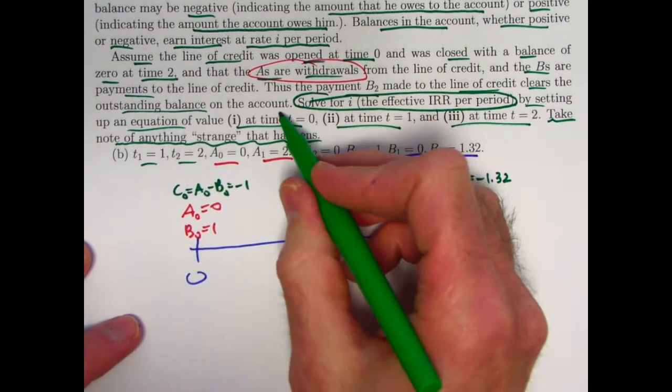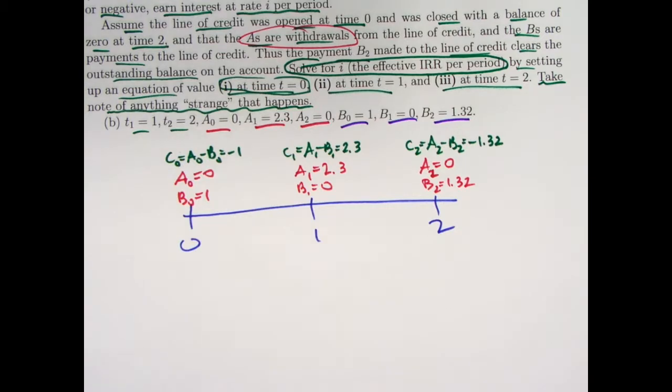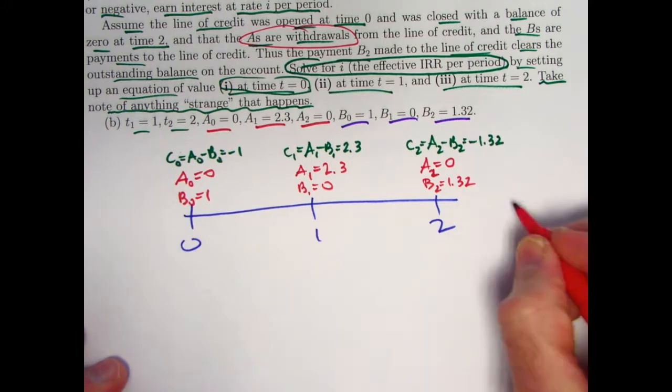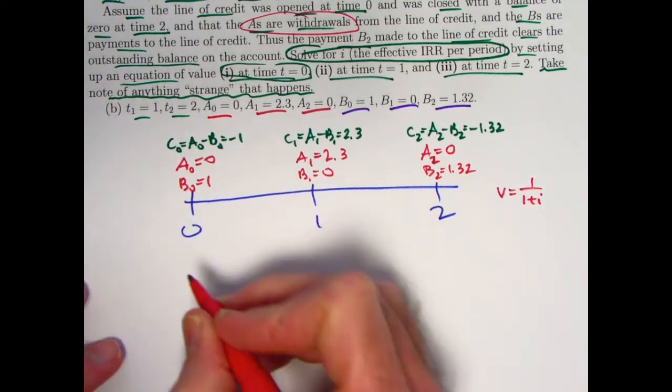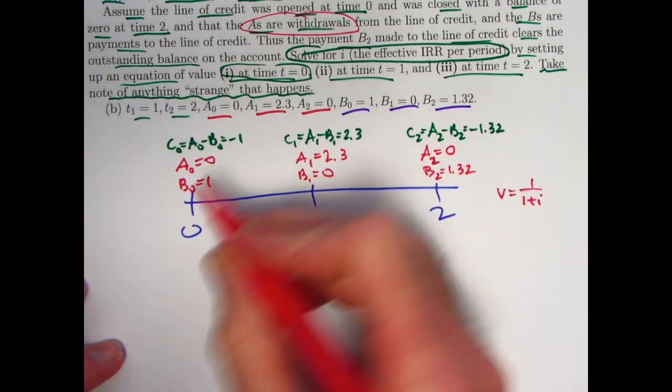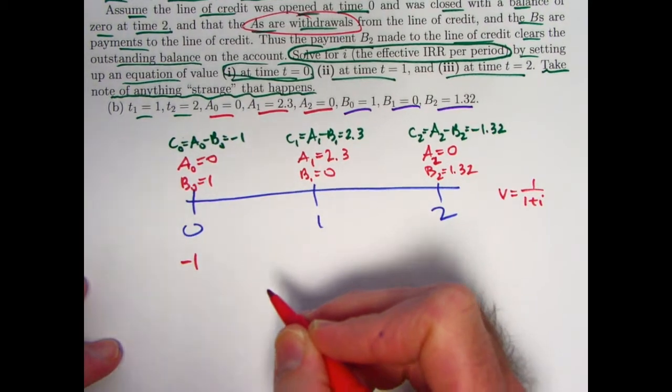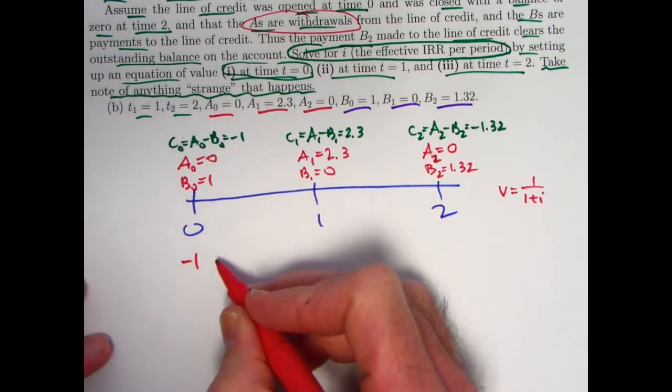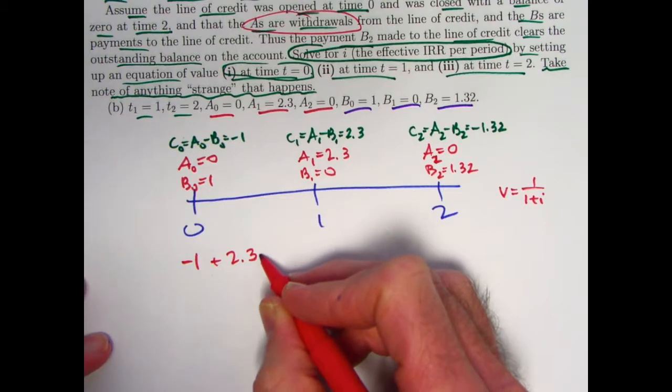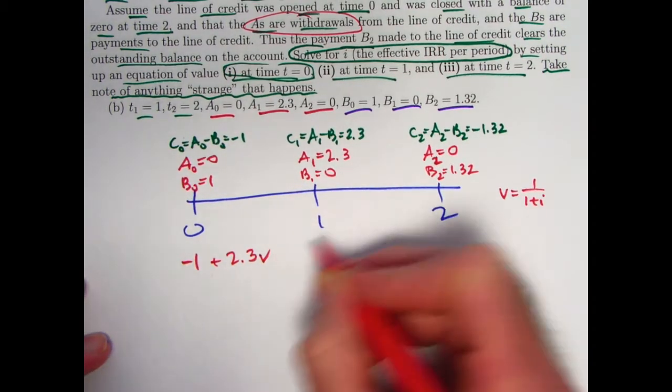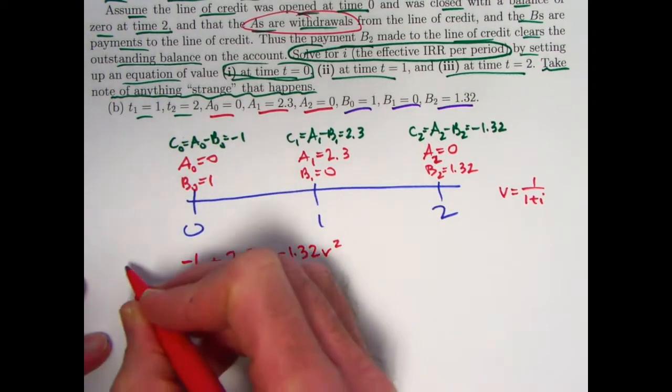All right, so starting with part one here, set up an equation of value at time zero. That means we need to discount back to time zero. And we will let V equal one over one plus I. That will be our present value discount factor. So the equation of value would be taking the C's, looking at the C's and taking signs into account. Negative one. That's the value of C zero at time zero. It's already at time zero. It doesn't need to be discounted. Then we have a plus 2.3 right there. That needs to be discounted back in time by one period. So it gets multiplied by V. And then we have a minus 1.32. Needs to go back two periods. So it gets multiplied by V squared. This is part one.